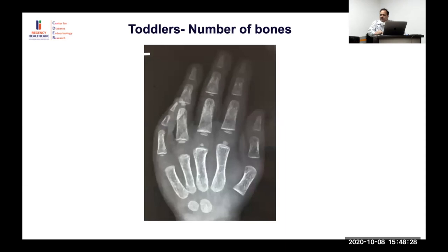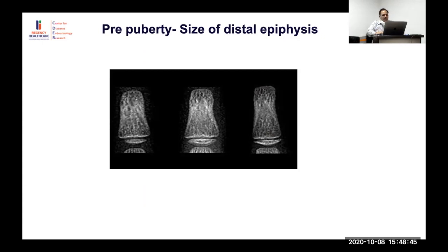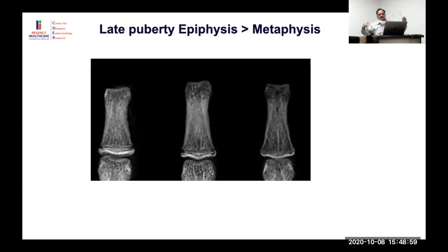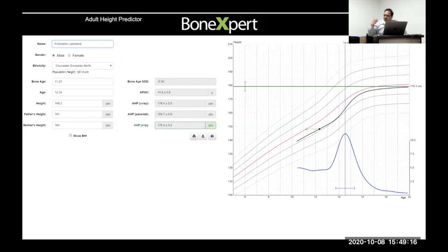As children grow, comparing the size of epiphysis versus metaphysis is the key assessment. On the left, the epiphysis is much smaller; moving rightward across ages it increases. Around mid-puberty — eight to twelve years — the epiphysis becomes as big as the metaphysis. Then it starts capping and finally fusing. Comparing across multiple bones gives a rough composite age estimate, which the Bone Expert formalizes.